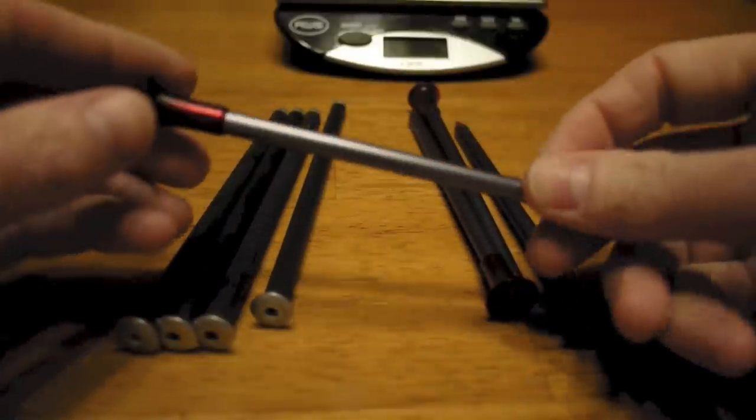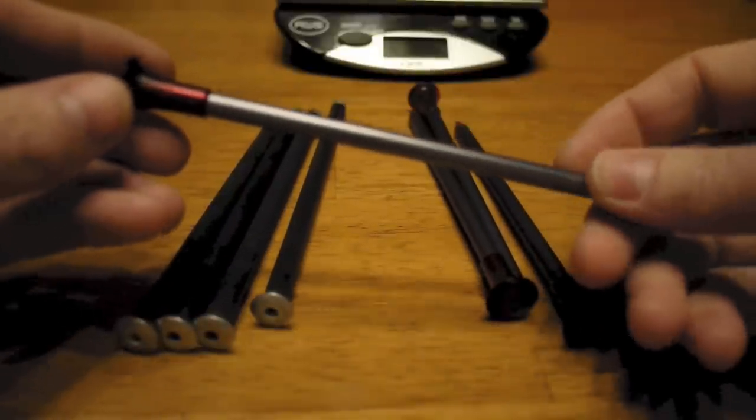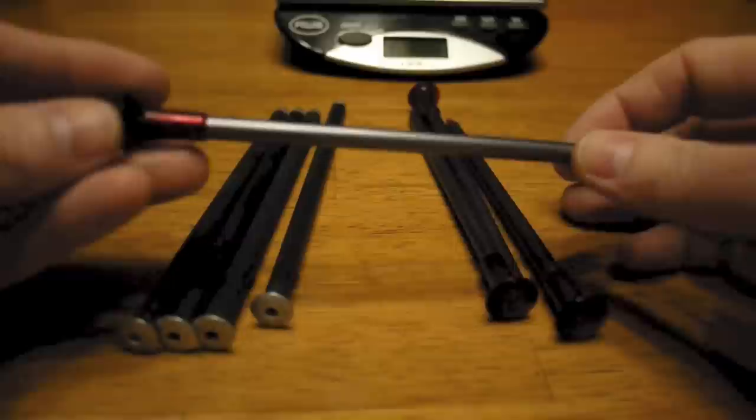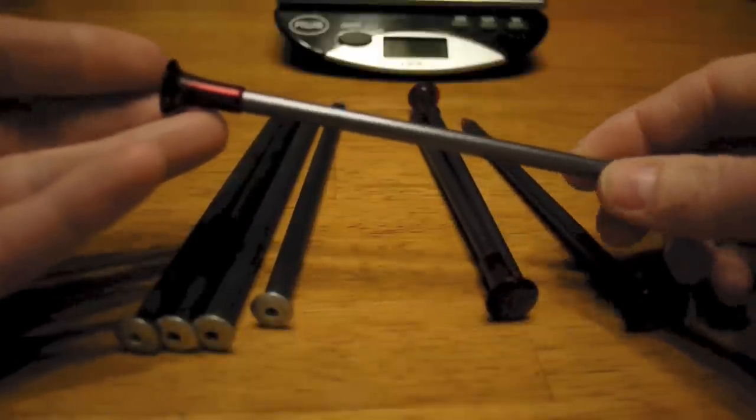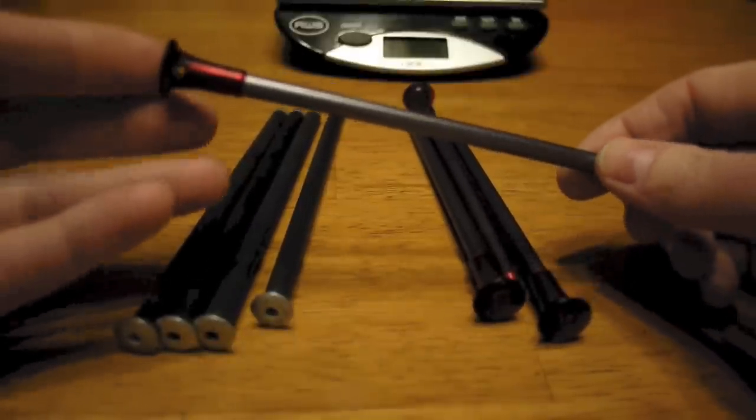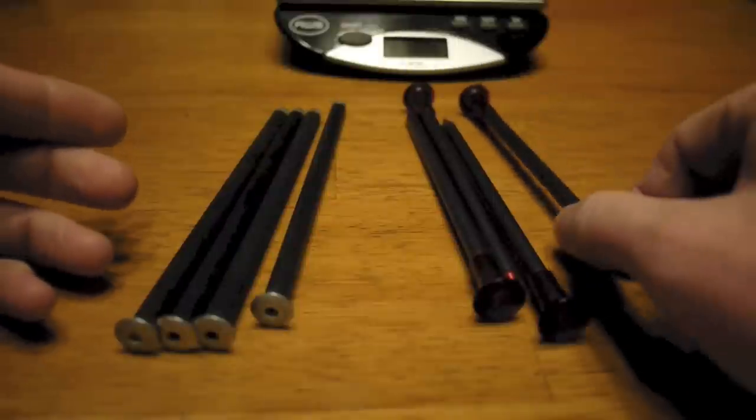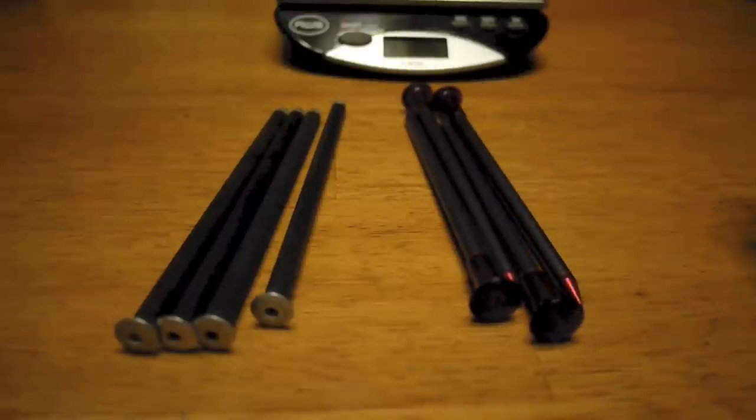These are the MSR Carbon Core tent stakes. I got these with my REI dividend actually. Our REI dividends just came out. Mine wasn't a whole lot, about $26, and I paired it with a 20% off coupon. So I was looking for something that would be around $26 and these tent stakes happen to be that.